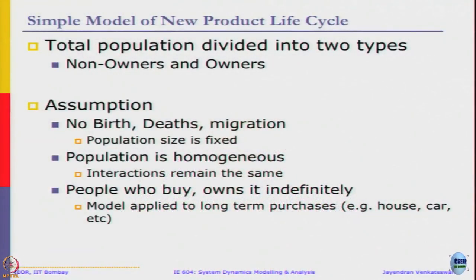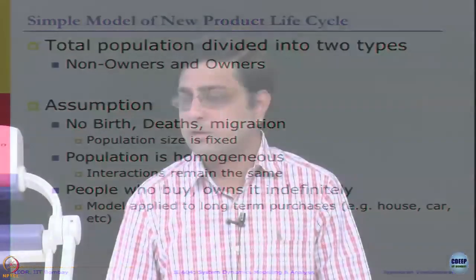Let us take a very simple model of new product life cycle or new product diffusion. There are more complex models as we can maybe see later, but let us divide the population into just two distinct types non-owners and owners. You can imagine any new product like a cell phone or a cycle or watch or whatever it is, bags anything.